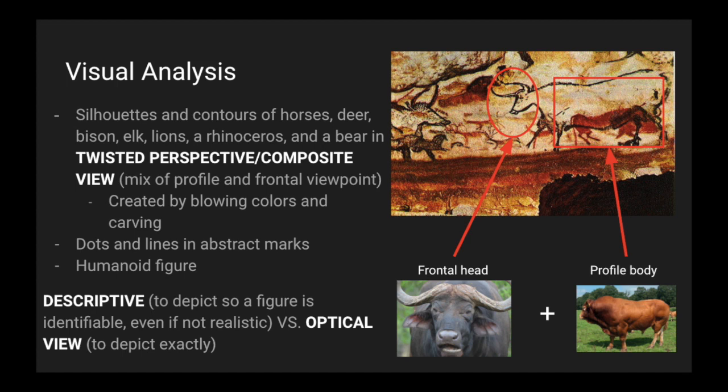Descriptive and optical view are defined here. Descriptive means to depict so a figure is identifiable, even if it's not realistic, versus optical view is to depict exactly. On the cave, there are also dots and lines in abstract marks and a humanoid figure that we'll see a little later. These shapes were created by blowing colors and also carving on the walls.